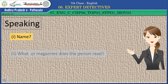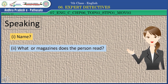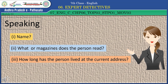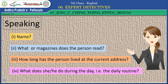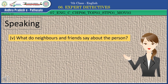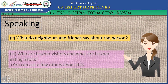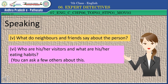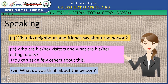The questions are: 1) Name. 2) What newspapers or magazines does the person read? 3) How long has the person lived at the current address? 4) What does she or he do during the day — the daily routine? 5) What do neighbours and friends say about the person? 6) Who are his or her visitors and what are his or her eating habits? 7) What do you think about the person?